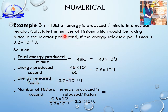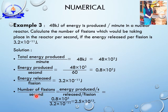We need to find number of fissions per second, so the time must be converted from minutes to seconds. Convert total energy produced per minute to per second: 48 × 10³ divided by 60 gives energy produced per second. Then, number of fissions per second equals energy produced per second divided by energy released per fission. Calculate these and you will get the answer.